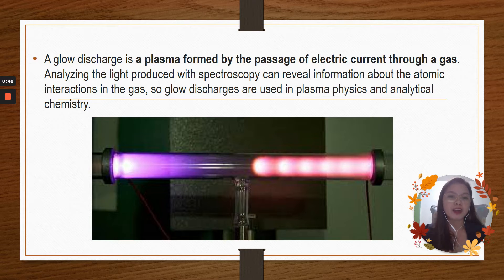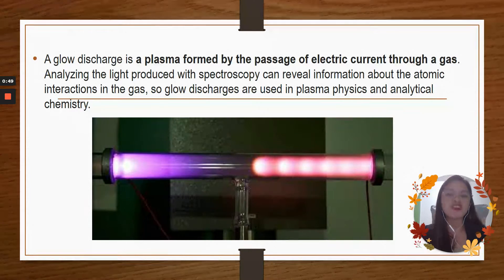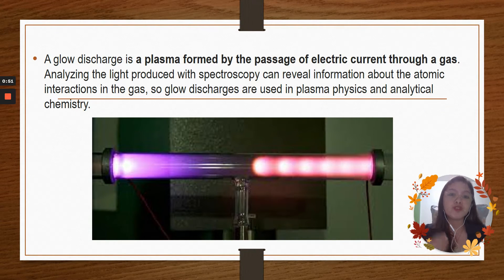In this part, as you can see in the picture below, this is a picture of a classic glow discharge in a Crookes tube source.